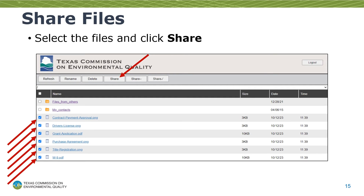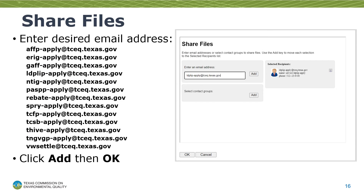After the files have uploaded, you now need to share them. Do this by clicking the box on the left of each file. After they are all selected, click the Share button. This screen will pop up and ask you to enter an email address. The email address you enter will depend on the grant program you're applying for. Most of them have the grant program acronym along with the word 'apply.' For example, for the light duty motor vehicle purchase or lease incentive program, you enter ldplip-apply@tceq.texas.gov. After you enter it, click the Add button. You'll know if you entered it correctly if the email address appears under Selected Recipients.